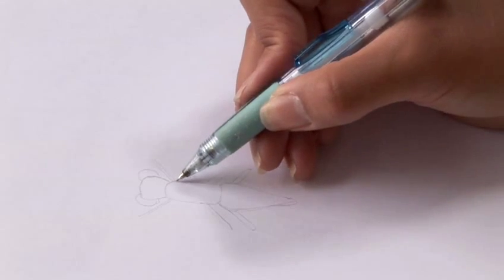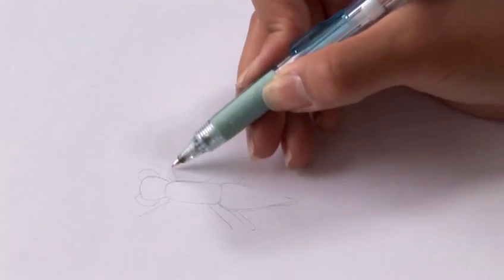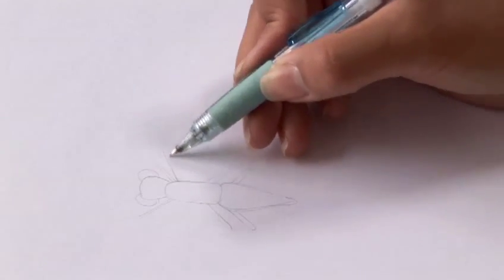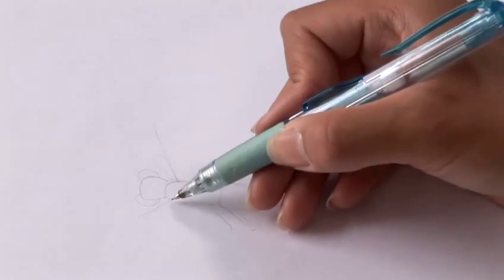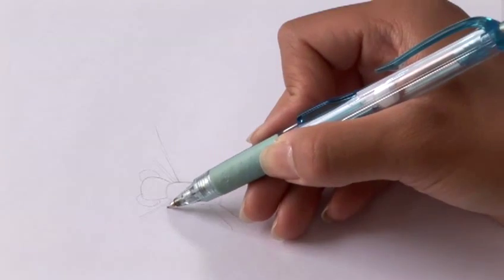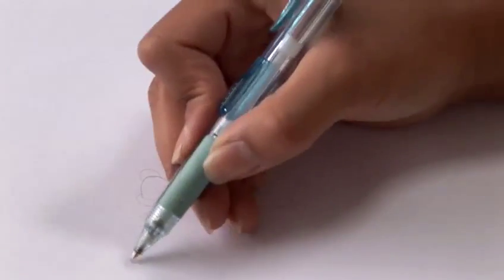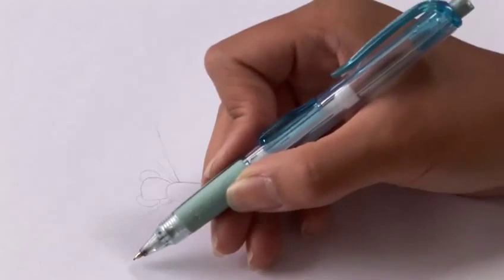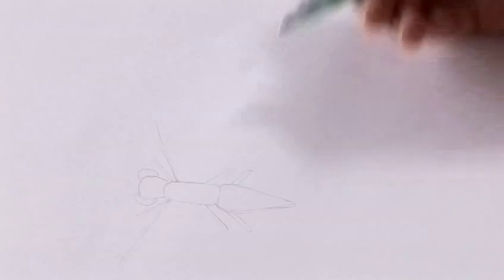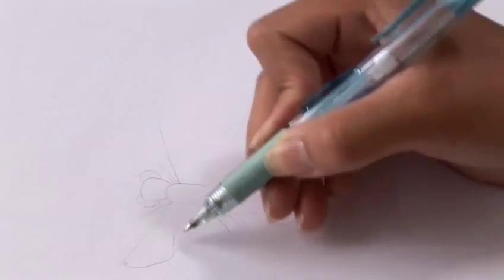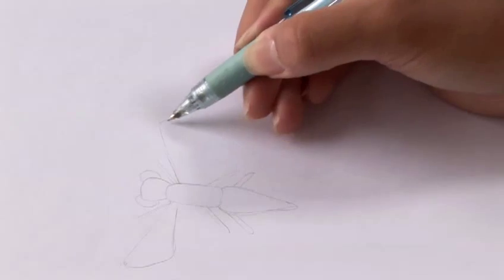And then I'm just going to roughly draw out the wings. I'm just going to draw it at an angle. And it's quite wide spread wings. And try and get them quite even. So just take a look at it.